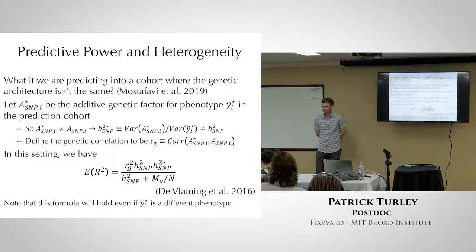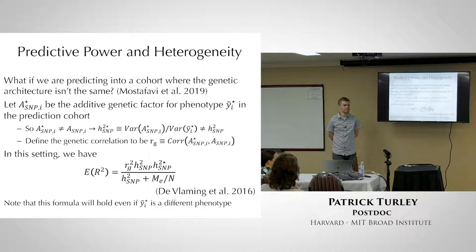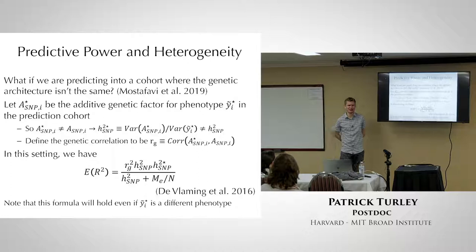The Gelman and Carlin paper — on the optional reading list — has nice examples of power calculations when no one has done the study before, in a non-genetics context. You just do the best you can. If you do it wrong, you'll be punished by the data gods. In general, be conservative if you can.